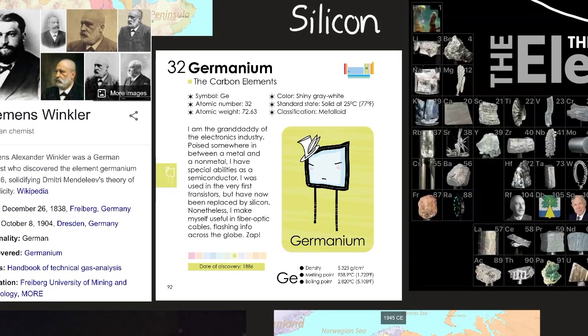The carbon elements. I am the granddaddy of the electronics industry. Poised somewhere in between a metal and a non-metal, I have special abilities as a semiconductor. I was used in the very first transistors, but now have been replaced by silicon. Nonetheless, I make myself useful in fiber-optic cables, flashing info across the globe. Germanium's date of discovery was in 1886. Its density is 5.323 grams per centimeters cubed. Its melting point is 938.9 degrees Celsius, or 1720 degrees Fahrenheit. Its boiling point is 2820 degrees Celsius, or 5108 degrees Fahrenheit.